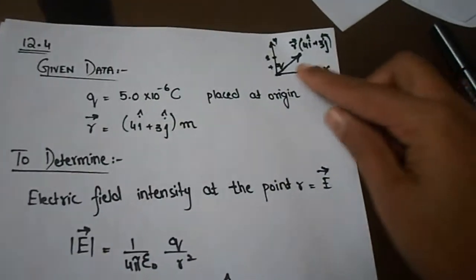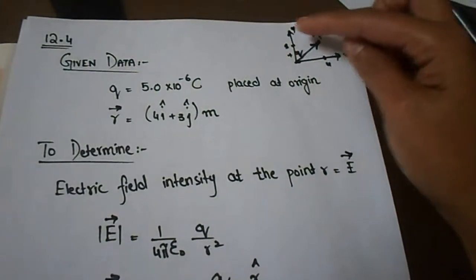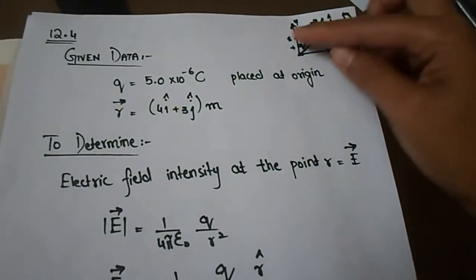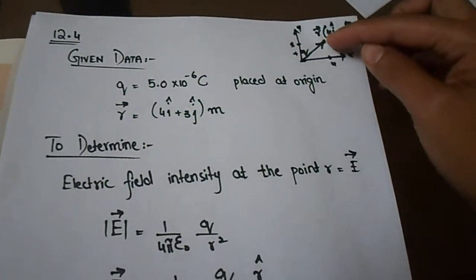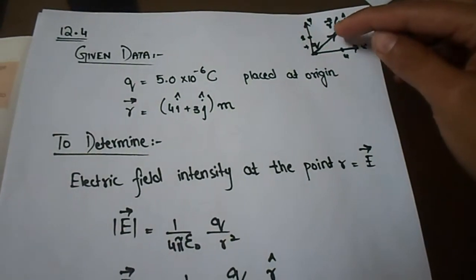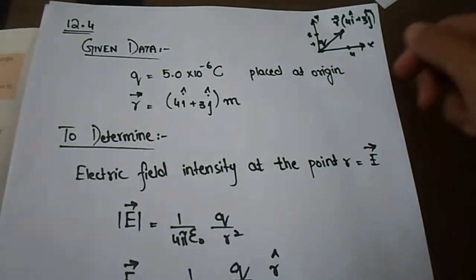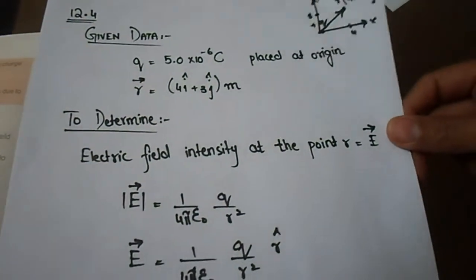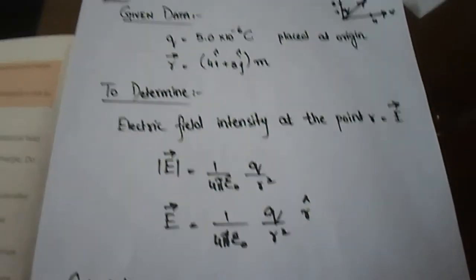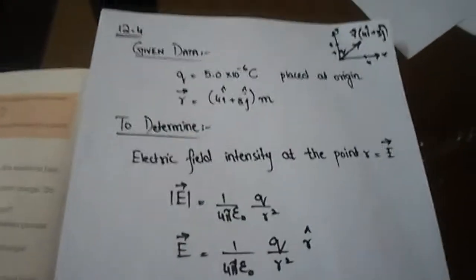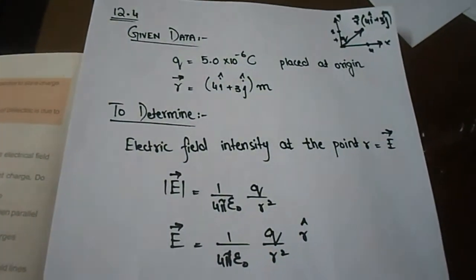Let's suppose if we have x-axis and y-axis, then we have 4i plus 3j. Let's suppose this position is being made, so at this point the charge q produces an electric field intensity which we have to calculate.